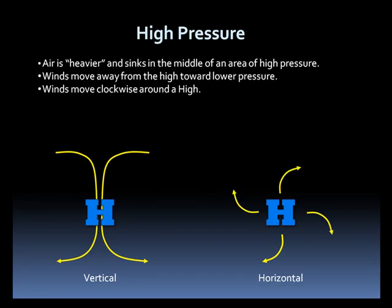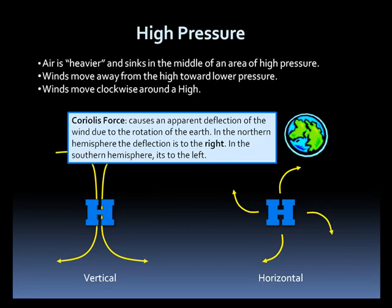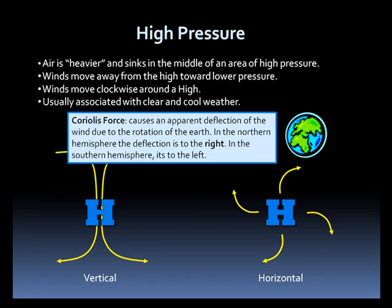This is the result of the Coriolis force, which causes an apparent deflection of the wind because of the rotation of the earth. In the northern hemisphere, the deflection is to the right. In the southern hemisphere, it's to the left. High pressure is usually associated with clear and quiet weather.